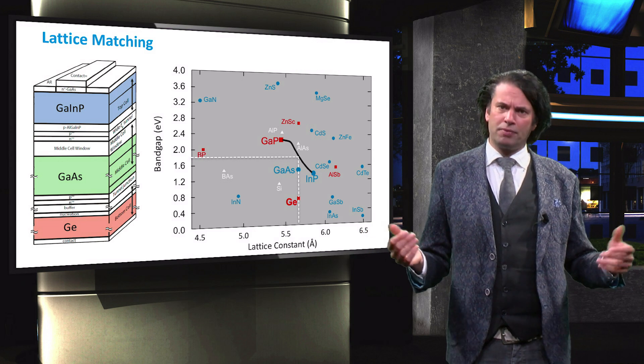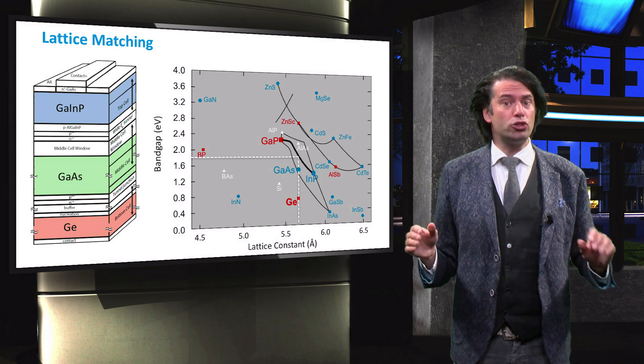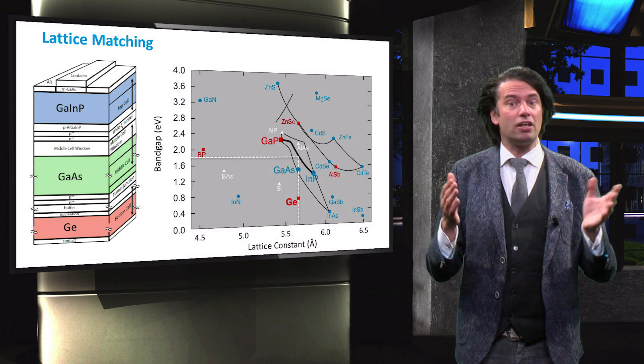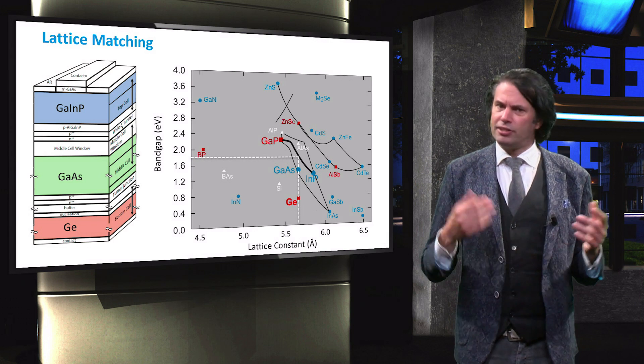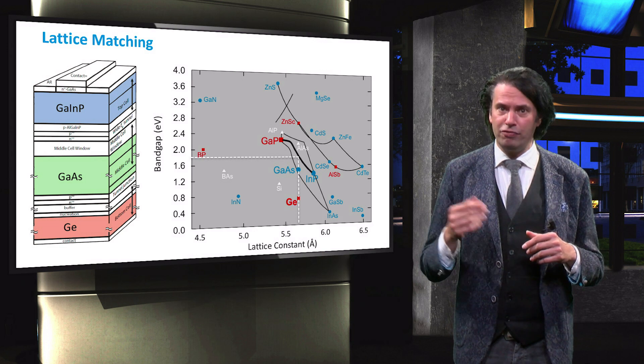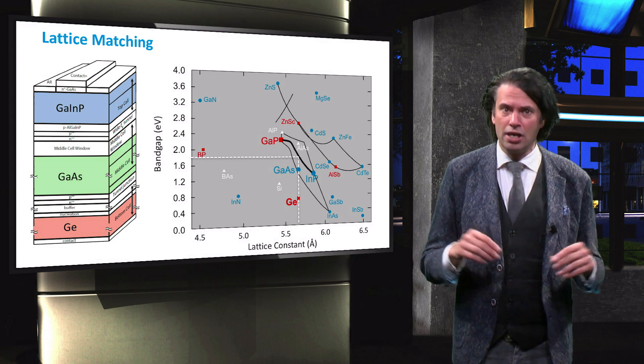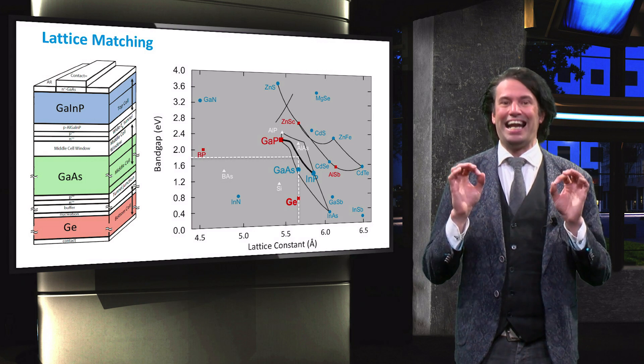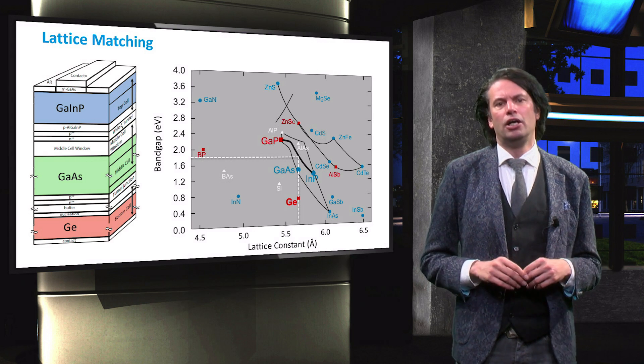Similarly, several combinations of elements can be used to make different materials with a particular lattice constant. Since the typical multijunction device on the left has 3 cells with similar lattice constants, this device is lattice matched.